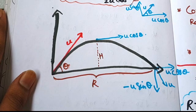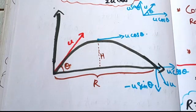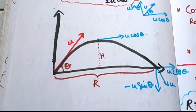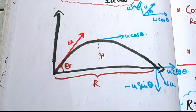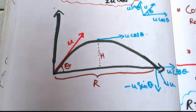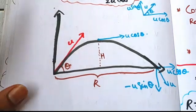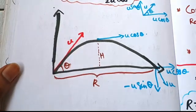Maximum height is u squared sin squared theta by 2g. Here, u sin theta is the initial vertical velocity, denoted as u_y0.